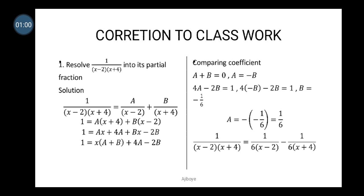You introduce constants as the numerator of the supposed simple partial fraction, and then you separate the linear factors as the denominators of the supposed simple partial fraction.